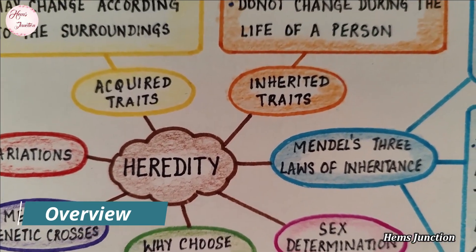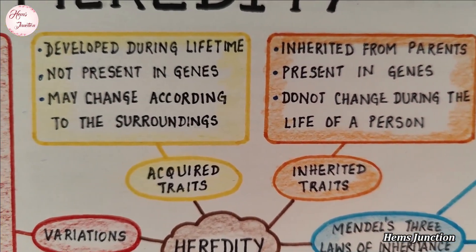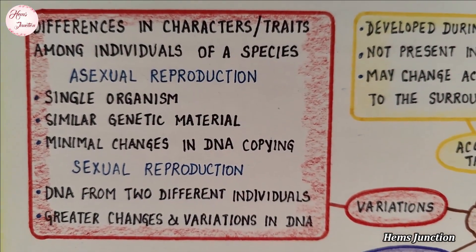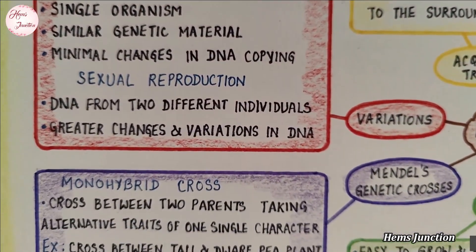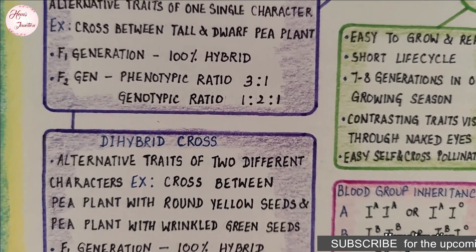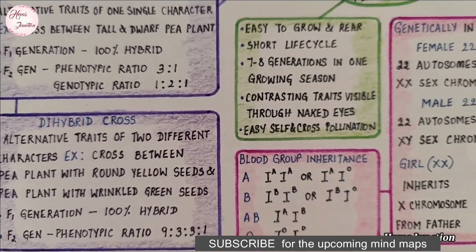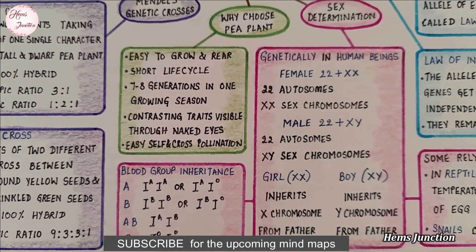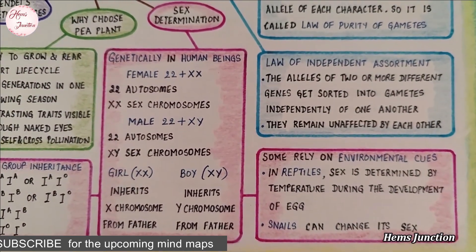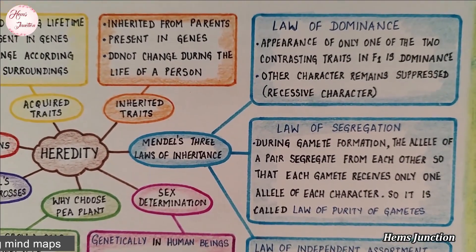Let's first have an overview of the mind map. These are the topics from the chapter that are covered in this mind map. A few more important key points have been shared in the description box. Now, here is each topic in detail.